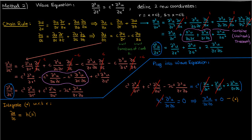Why is that? Well, because if we go backwards and differentiate with respect to r, the partial derivative with respect to r of a pure function of s will just be 0. Remember, when we take partial derivatives with respect to one variable, we assume that all other variables are held constant.